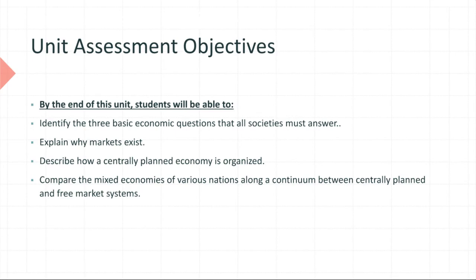Second, we will be explaining why markets exist. A market is a place of exchange — a place of trade of goods, commodities, services, people, and labor. We will explore the types of markets in the world, as well as discussing the pros and cons of these systems.